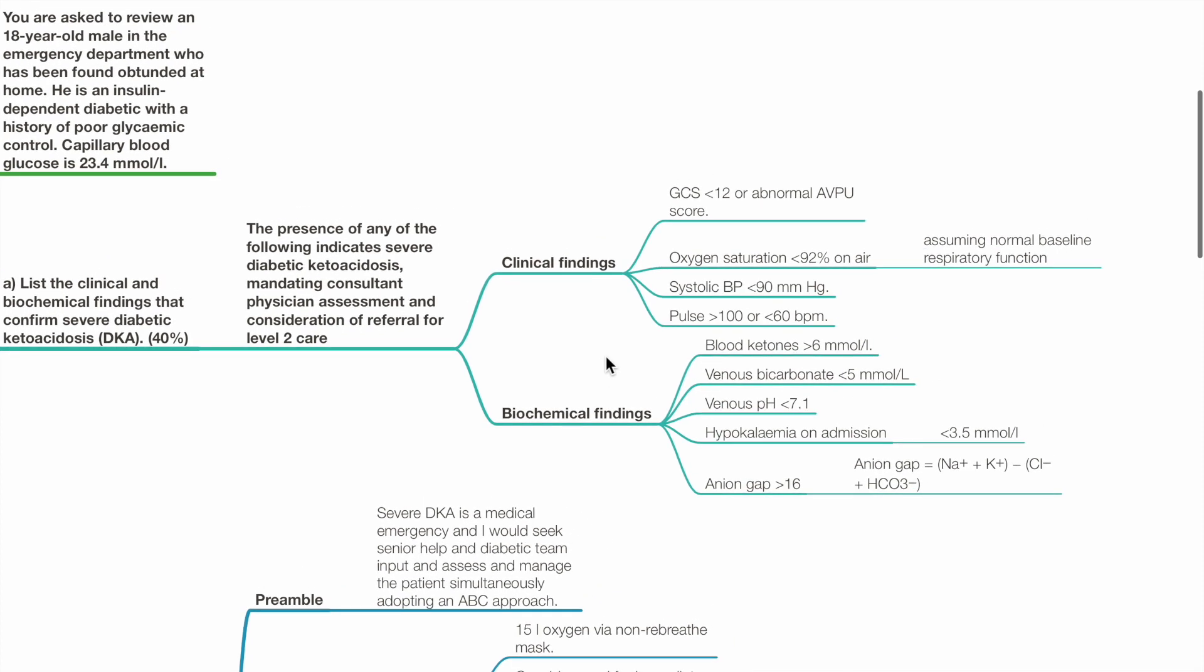Clinical findings include GCS less than 12 or abnormal AVPU score, oxygen saturation less than 92% on air, SBP less than 90 mmHg, pulse more than 100 or less than 60 beats per minute. Biochemical findings include blood ketones more than 6 mmol per liter, venous bicarbonate less than 5 mmol per liter, venous pH less than 7.1, hypokalemia on admission, and ion gap more than 16.